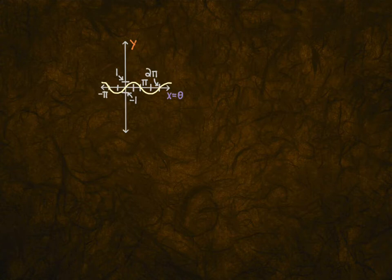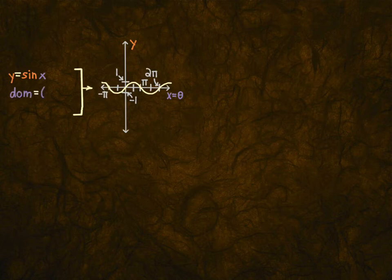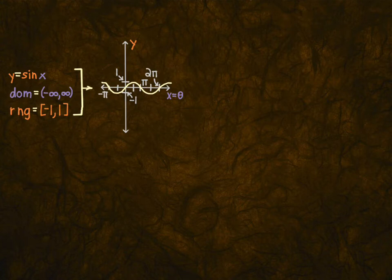This just keeps going forever, oscillating like this — that's called a sine function, also called a sine wave. The basic sine function is y equals sine x. The domain, as you can tell from the graph, is all real numbers, or negative infinity to infinity. The range is negative one to one, including the endpoints, so you use square brackets on both sides. People tend to remember the domain but forget the range.